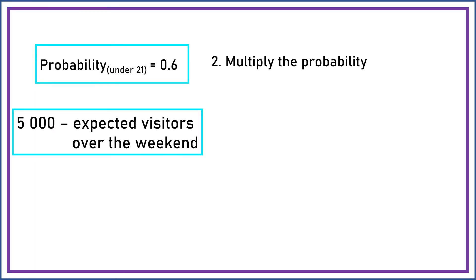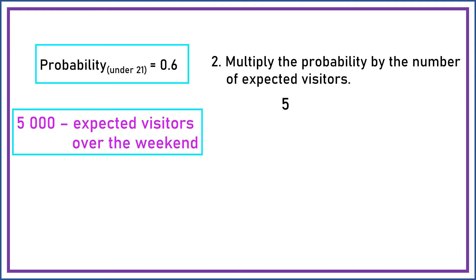Number two, multiply the probability by the number of expected visitors. So we have 5000 times 0.6. In multiplying numbers with a multiple of 1000, multiply the non-zero digits. Then count the number of significant zeros in the factors. So we multiply 6 and 5 and the answer is 30. The number of significant zeros in the factors is 3.